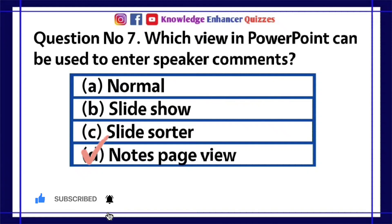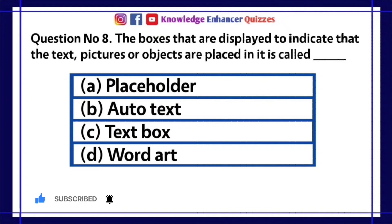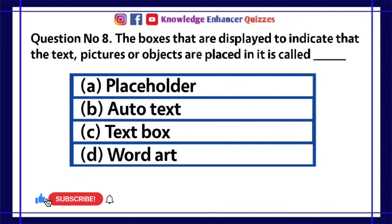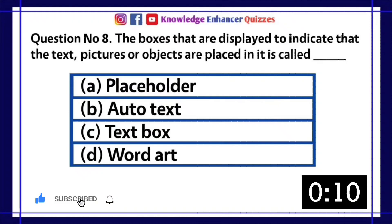Option D is the right answer. Question number 8. The boxes that are displayed to indicate that the text, pictures or objects are placed in it, is called — A. Placeholder, B. Auto Text, C. Text Box, D. Word Art.